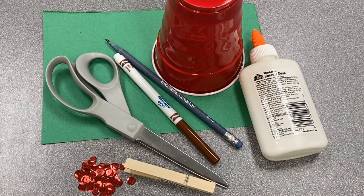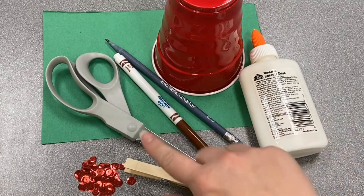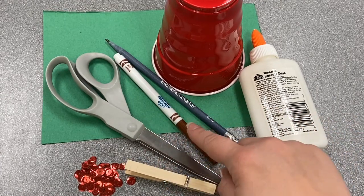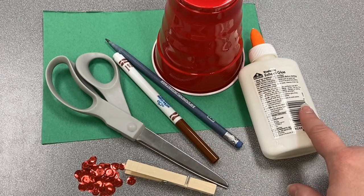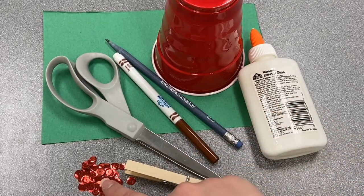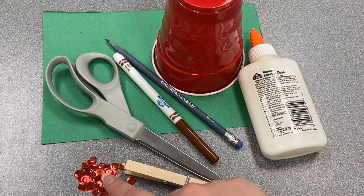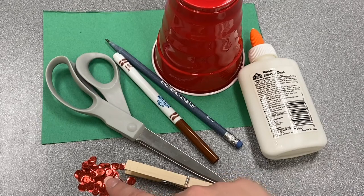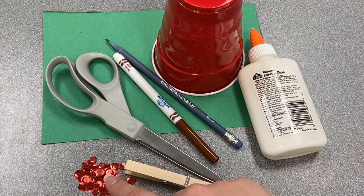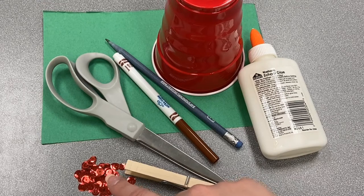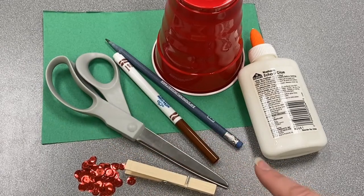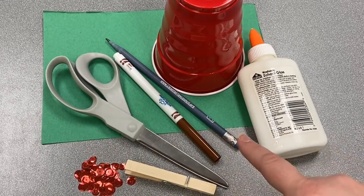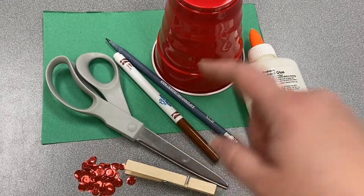For this project you will need a clothespin, a brown marker, some glue, some red sequins or you could also use some small red beads, some little pieces of red paper, or some small red pom-poms, a piece of green construction paper, a pencil, and some scissors.